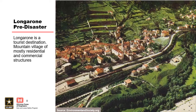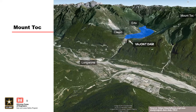Longarone at the time was a tourist destination — a relatively small village, but popular for people to visit and take in the scenery. It was mostly residential and commercial. Notice the stair-step feature and what looks like railroad tracks in the picture. Now, the project location: Vajont Dam is there in the middle, with Longarone about two miles downstream. On the left side of the reservoir are two little villages called Casso and Erto. On the right is Mount Toc, which literally means 'the walking mountain.' Locals were very familiar that this mountain was known to have creep, landslides, and to move and shift over time.